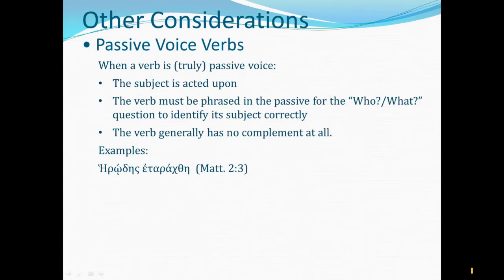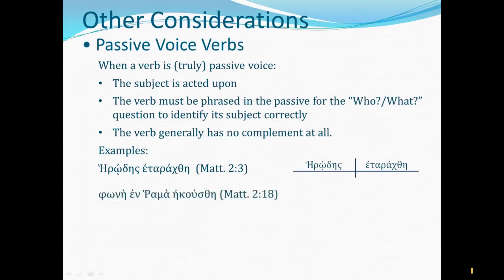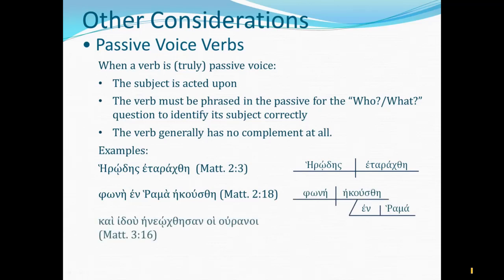The diagram for Herod was troubled is straightforward: the verb is in its proper slot, the subject is in its proper slot, and there is no complement at all. Another example: A voice was heard in Ramah — from the end of Matthew 2, when Herod had killed all the boy babies two years old and under in the vicinity of Bethlehem. Was heard — who or what was heard? The nominative case noun to provide the subject is phone, and it would be diagrammed accordingly.